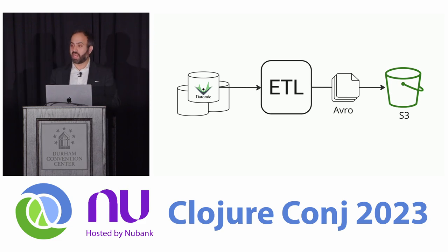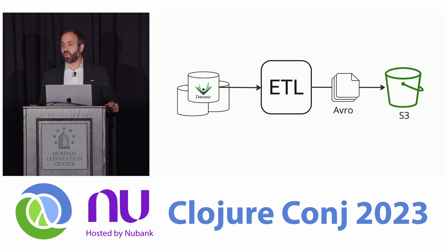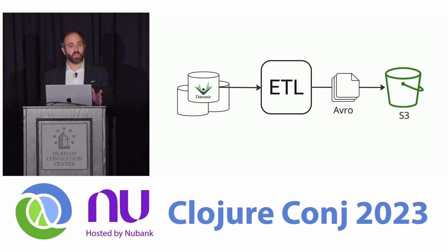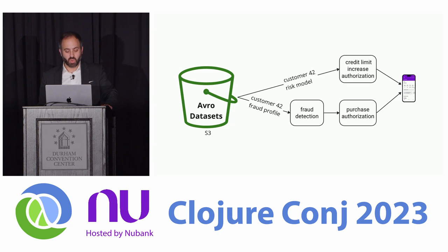We have this ETL process at Nubank that is this gigantic meat grinder that runs daily. Some of the inputs for this meat grinder are information in transactional databases from Datomic, some inputs are from models themselves — data sets computed by driving other data sets. It's a lot of data. The output of this meat grinder are Avro files that go to S3. Some of these data sets need to be consumed and used by operational services, transactional services. One example of this is credit limit increases.